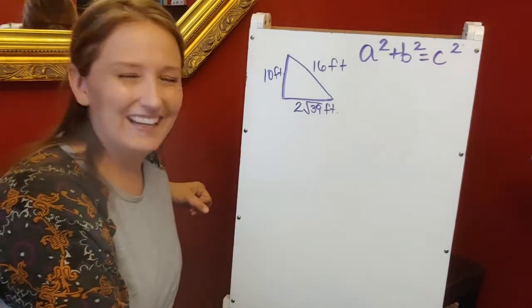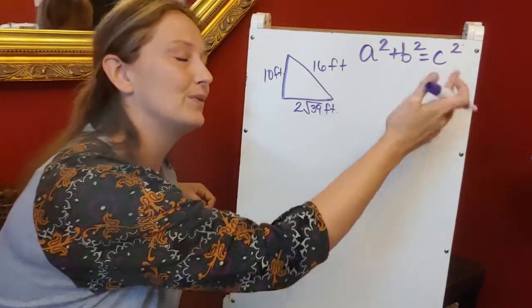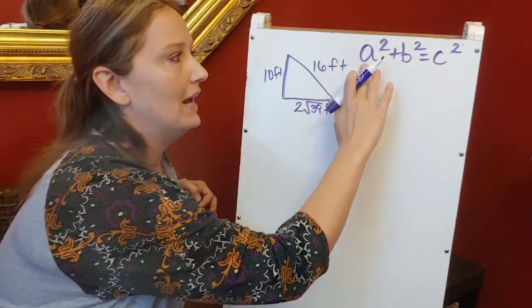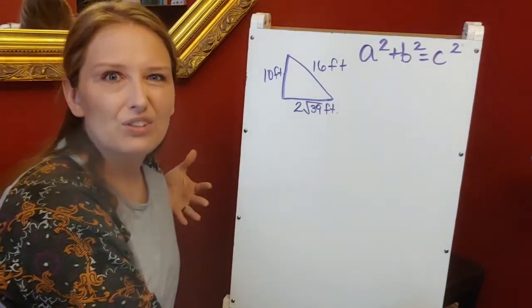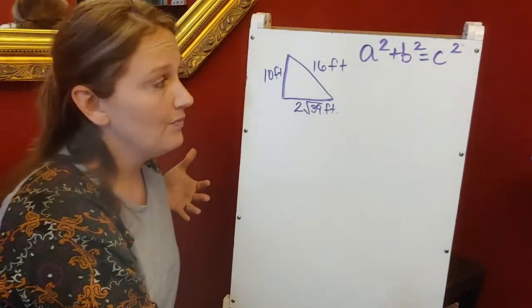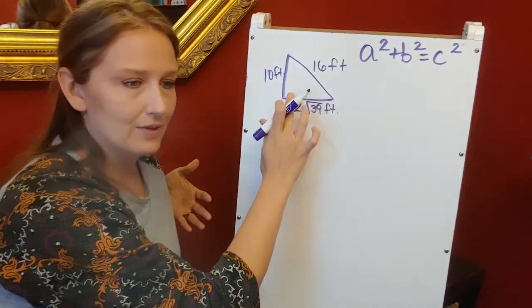The Pythagorean theorem is a² + b² = c². A and B are the legs of your triangle, C is always your hypotenuse and it's always your longest side. We don't have a marking here that tells us this is a right triangle.